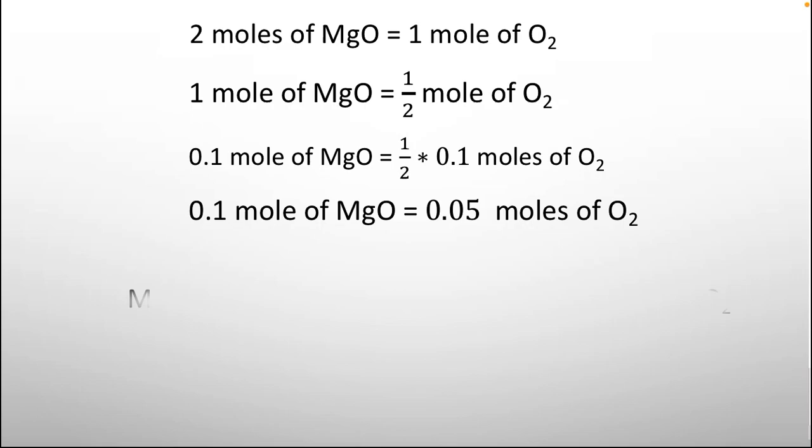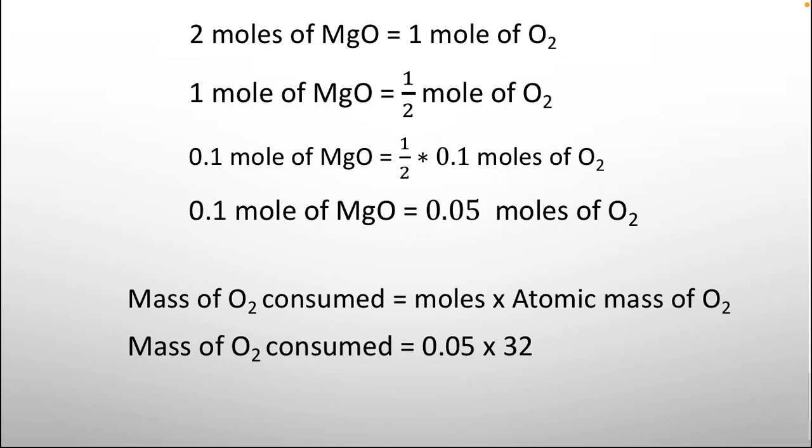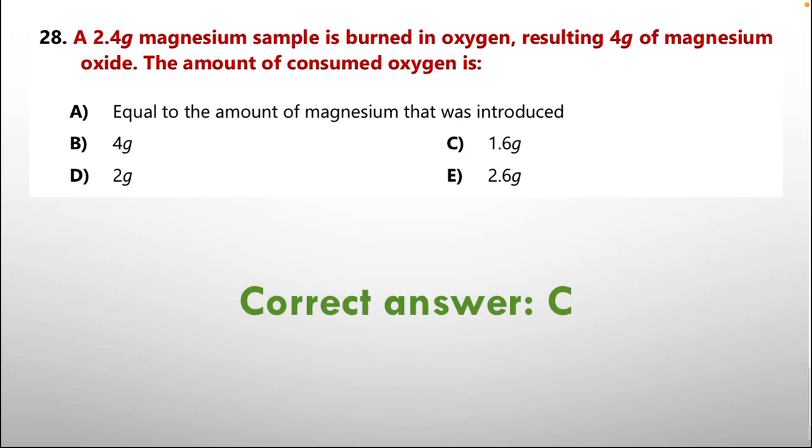Mass of oxygen consumed from the moles, we can get the mass through the formula. Mass of oxygen consumed equals to moles multiplied by atomic mass of oxygen gas. So, the answer is 0.05 multiplied by 32. Answer is 1.6 grams. Through these calculations, the answer we get is option number C, 1.6 grams.